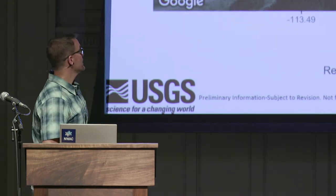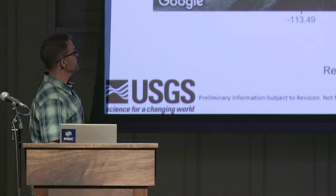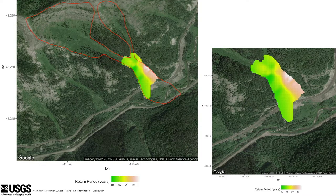Here's a closer view. You can see the shed here, and this is the Highway 2 corridor right here — with more frequent avalanches on this side of the avalanche path.